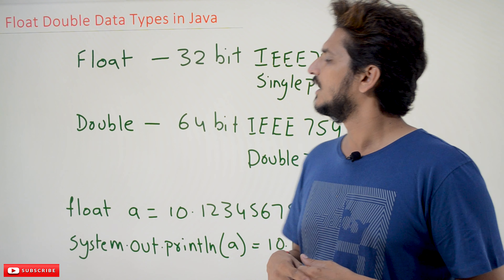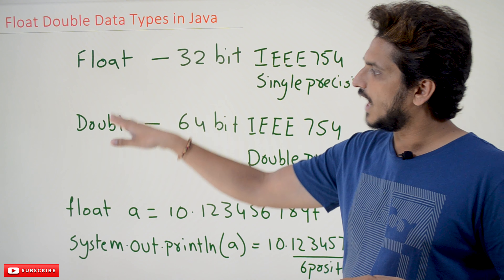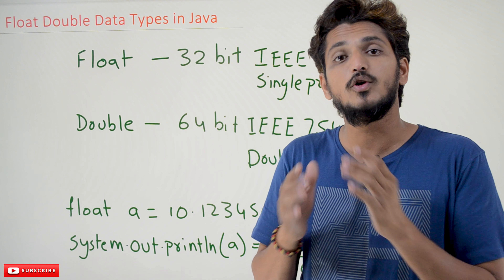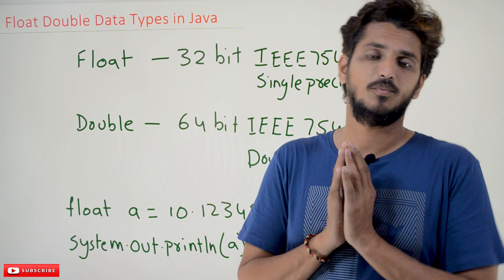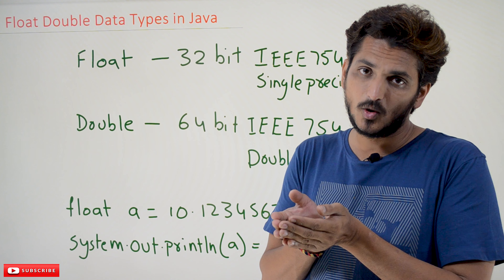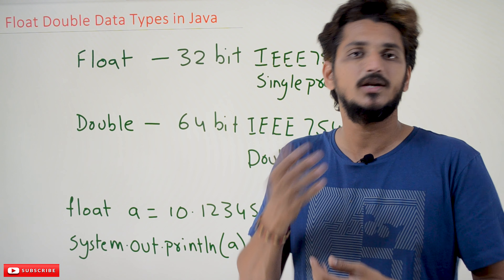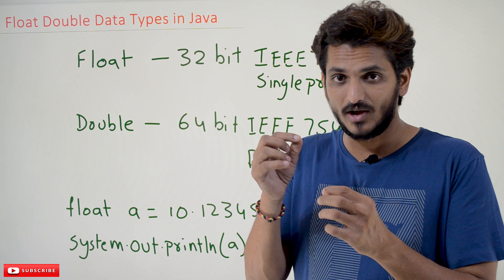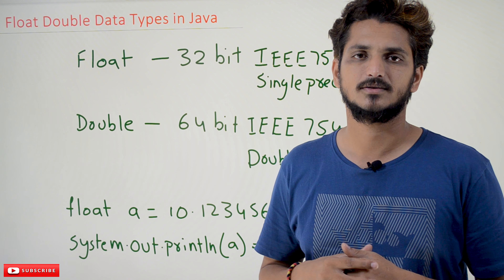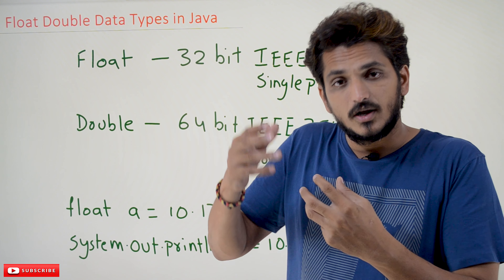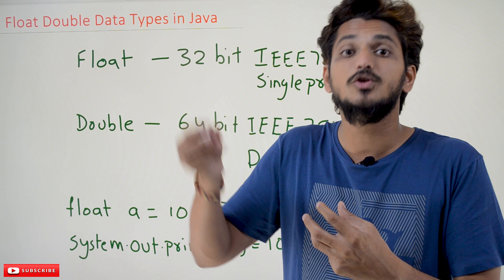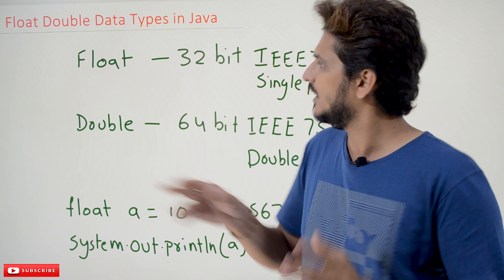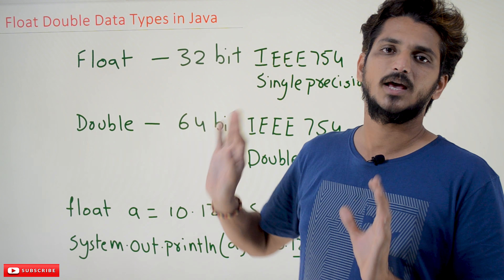Coming to today's class, float and double — these two data types are used to store floating point numbers. What are floating point numbers? Decimal numbers — we call them floating point numbers. For example, 99.8. If you have a decimal value, we call it a floating point number. If you want to store floating point numbers in memory, in the random access memory, we have to use these two data types.